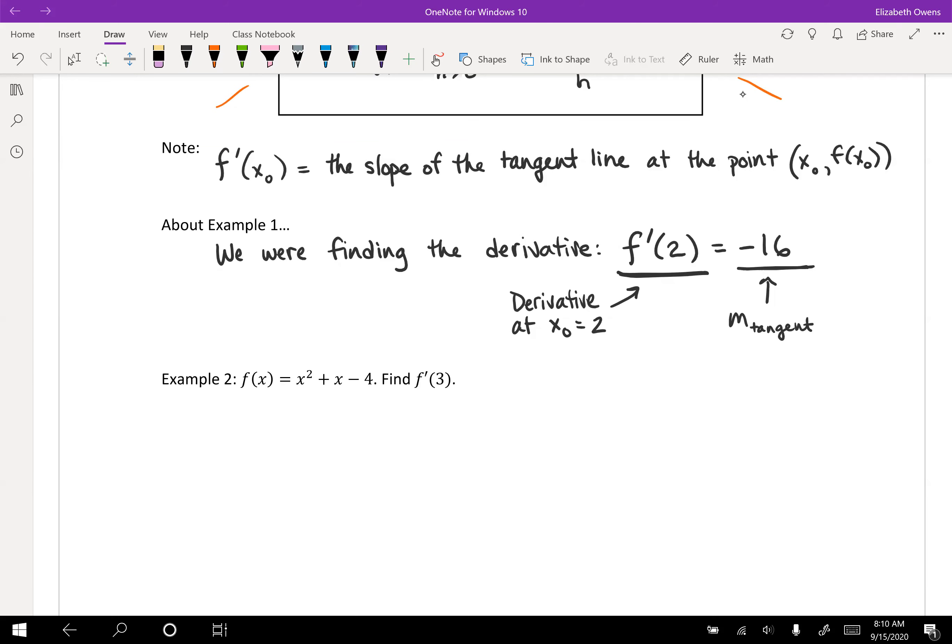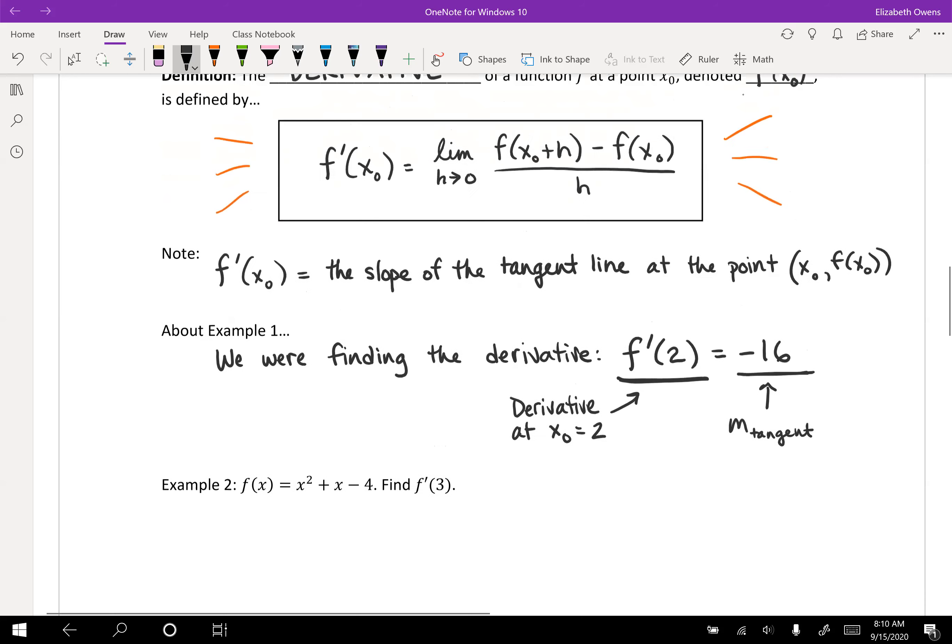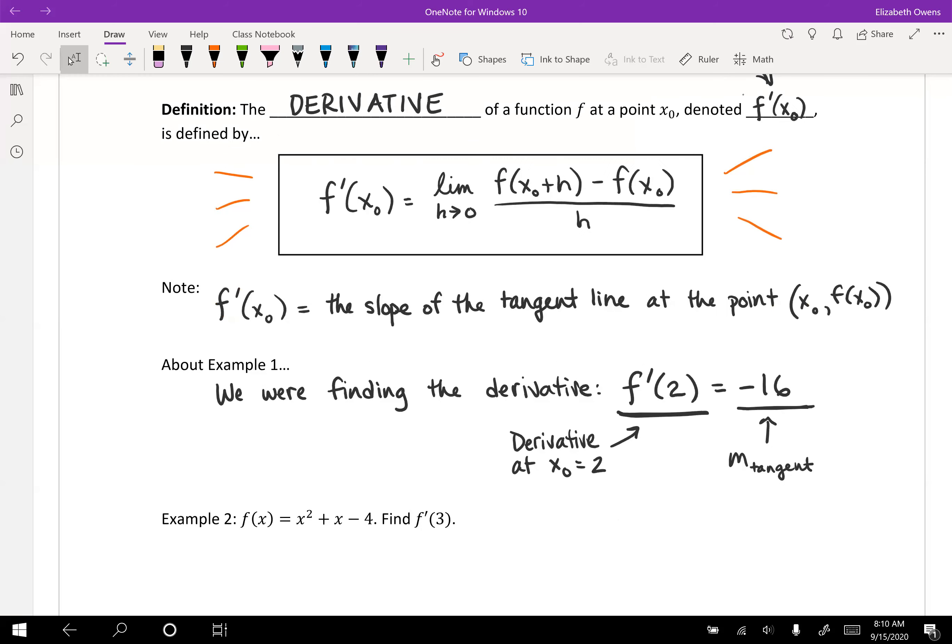So this time in example two, we're going to come at it directly and say we want to find a derivative. So our function here, f of x equals x squared plus x minus 4, and we're told to find f prime of 3, the derivative of our function f at the value x equals 3, or x naught equals 3. So x naught equals 3 in this case.